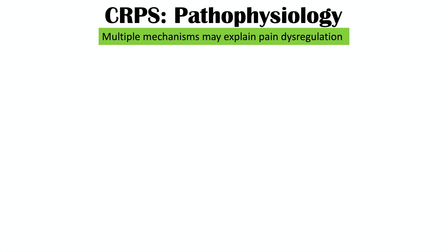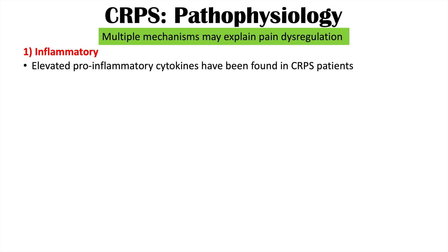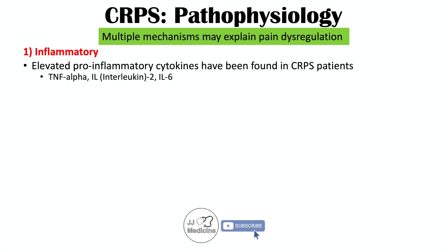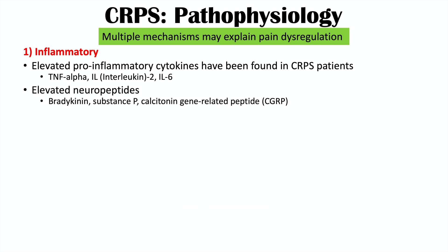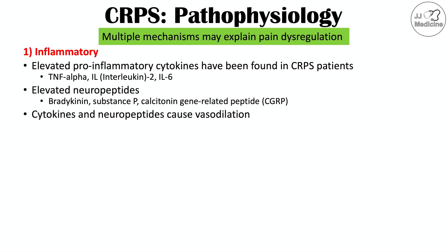Now let's talk about the pathophysiology. There are multiple mechanisms that explain the pain dysregulation central to this condition. One is inflammatory changes — elevated pro-inflammatory cytokines have been found in CRPS patients, including TNF-alpha, interleukin-2, and interleukin-6. There are also elevated neuropeptides, including bradykinin, substance P, and calcitonin gene-related peptide, or CGRP. These cytokines and neuropeptides appear to cause vasodilation and lead to an inflammatory state within the affected area.